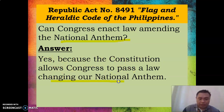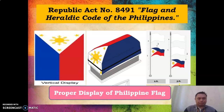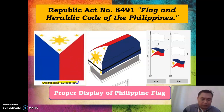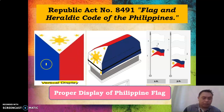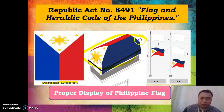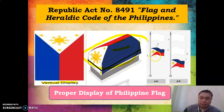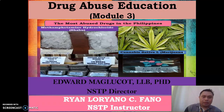Regarding proper display of the flag: when displayed vertically, red is on your right and blue is on your left as you face the flag. For a coffin, the left side of the dead body has the red, and the right side has the blue. For half-mast, the flag must be raised up first before being lowered down.